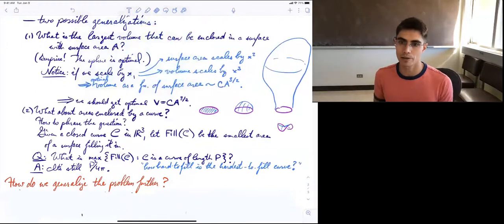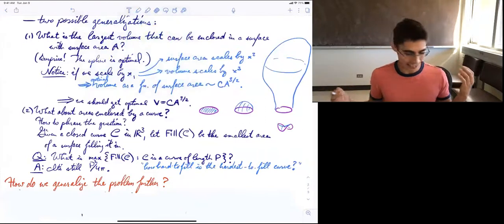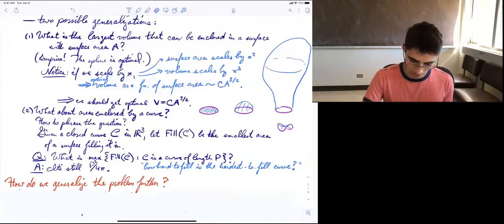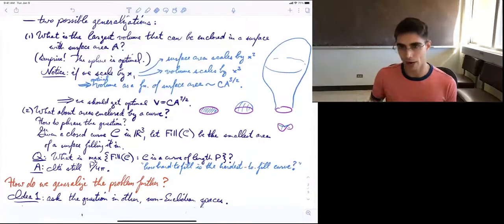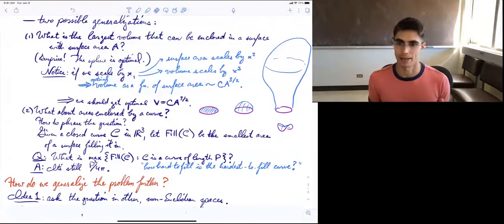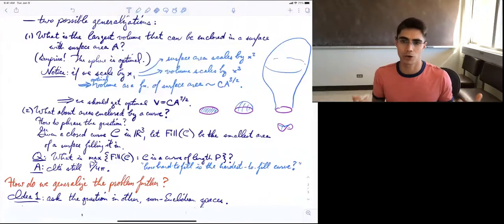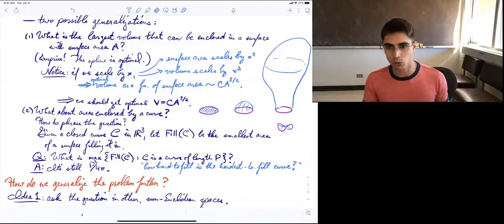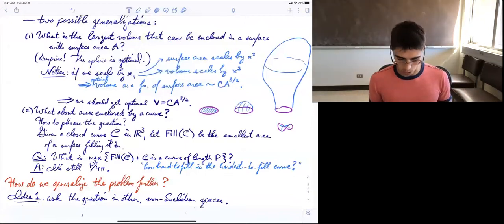So we're plagued by these questions that are too easy. How can we generalize this problem further so that it's no longer an incredibly easy question? And there are two directions you can go. One idea is you ask the same question, but now you go outside of Euclidean space. And you go to hyperbolic space or you go to some kind of infinite tree or a Cayley graph of a group, if you know what that is, and you ask the question there.